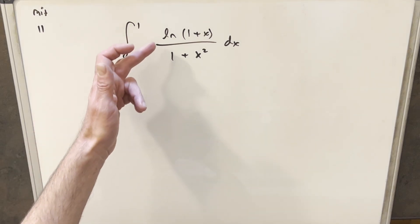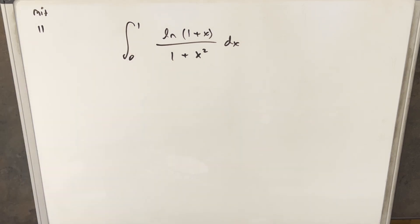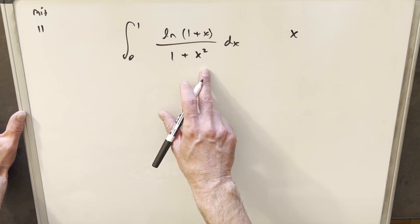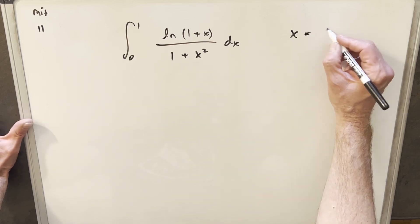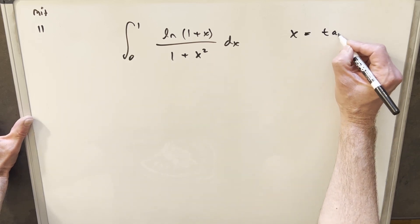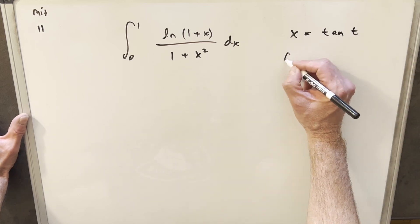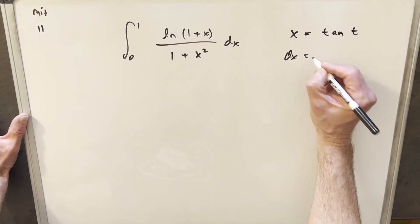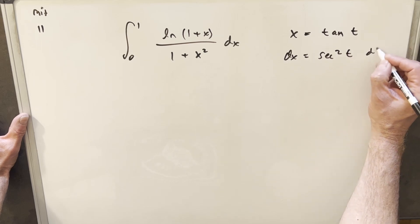I don't usually think of that when we have natural log in the expression. Usually when we do a trig substitution, we're looking at just a rational expression. Just focusing on the denominator, this is where we're usually going to substitute for tangent. So I'm going to call x equal to tan of t. We'll get our derivative: dx is going to be secant squared t dt.